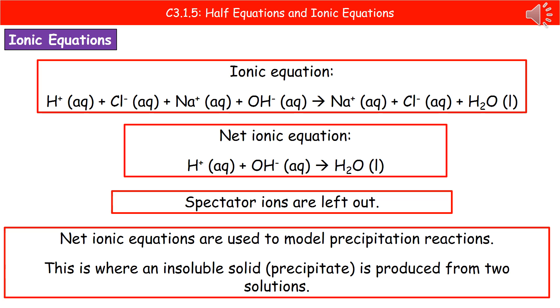One of the ways they're likely to ask you this question could very well be in terms of precipitation reactions, because what we can then see there is that we can just look at the actual ions involved in the change. So remember to leave the spectator ions out and write the net ionic equation only showing those that have changed between the reactants and the products.